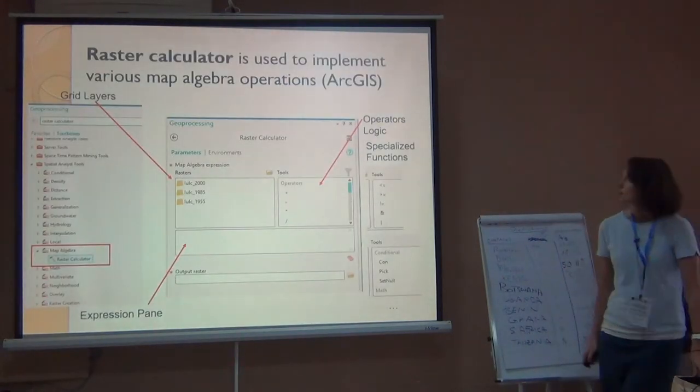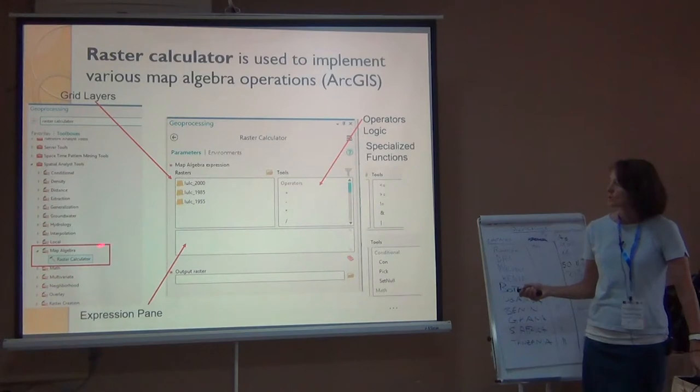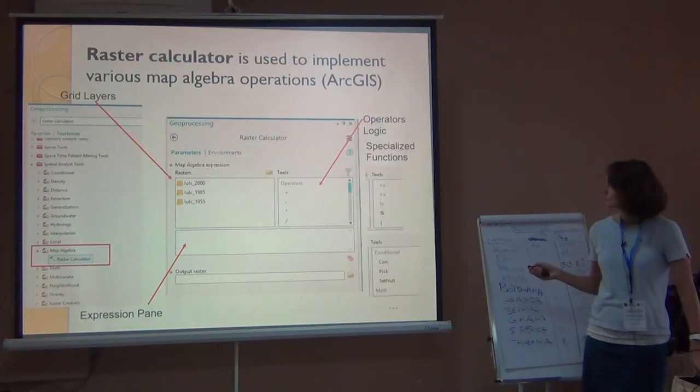This is what it looks like in ArcGIS. You're going to, it's under the raster calculator tool in the map algebra tool set. And you'll see here are your operators. You also have access to tools. You build your expression here and you specify an output raster.